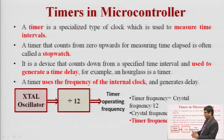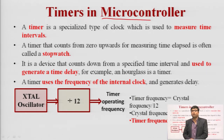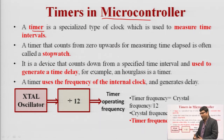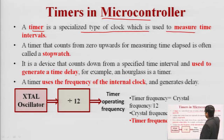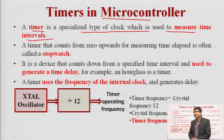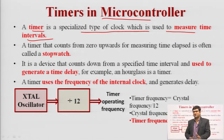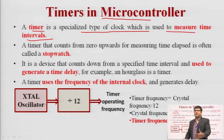Let us start with timers in microcontrollers. We need to understand the difference between timers and counters. A timer counts internal clock pulses of the system and a counter counts external clock pulses. Timers are used to generate time delay — they are a specialized type of clock used to measure time intervals. For example, in a robot, after 10 steps it takes a right turn — the counter counts those steps.